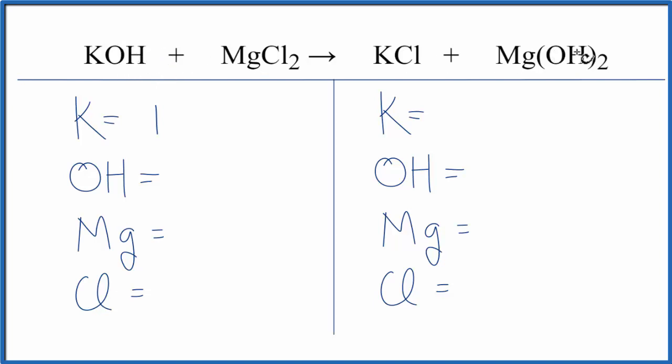So we have OH here, and then we have two OHs over here. I'd like to keep it together. It makes it a little easier as you count the atoms up. So we have one OH right here, Mg we have one, and then two Cls.